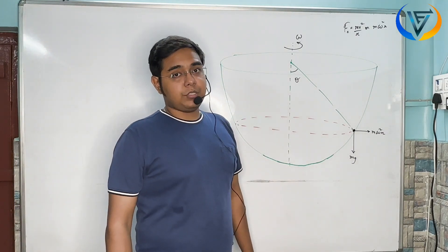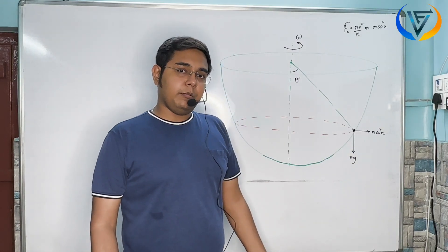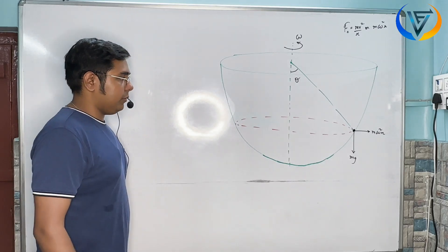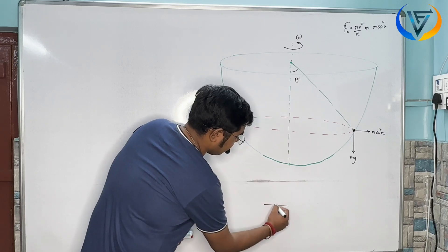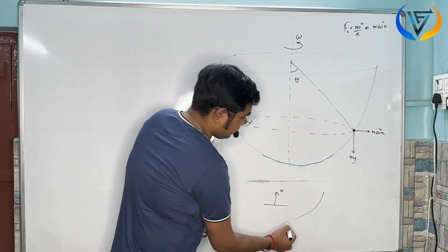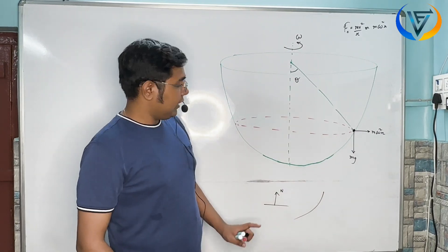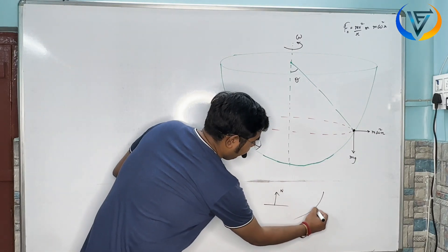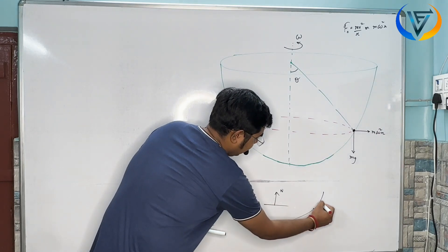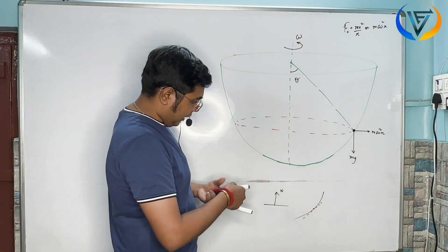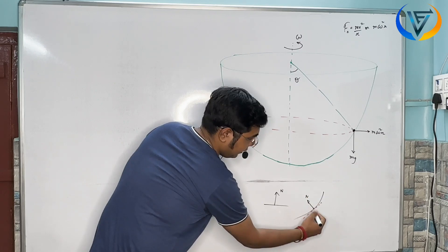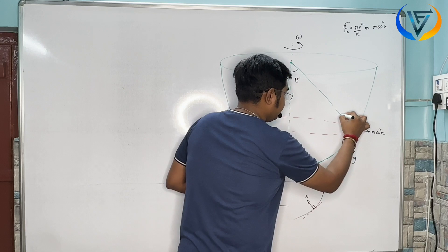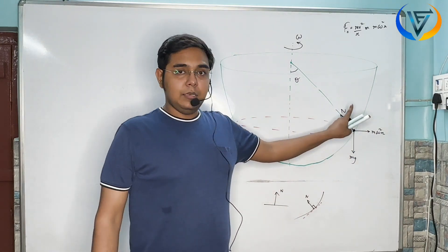The next force is the normal reaction force. Many students face a problem here determining the direction. Since the bob is in contact with this particular surface, we need to find the normal. The tangent and normal are perpendicular. So I will make a tangent at this point, and perpendicular to that tangent will be the normal reaction force direction.